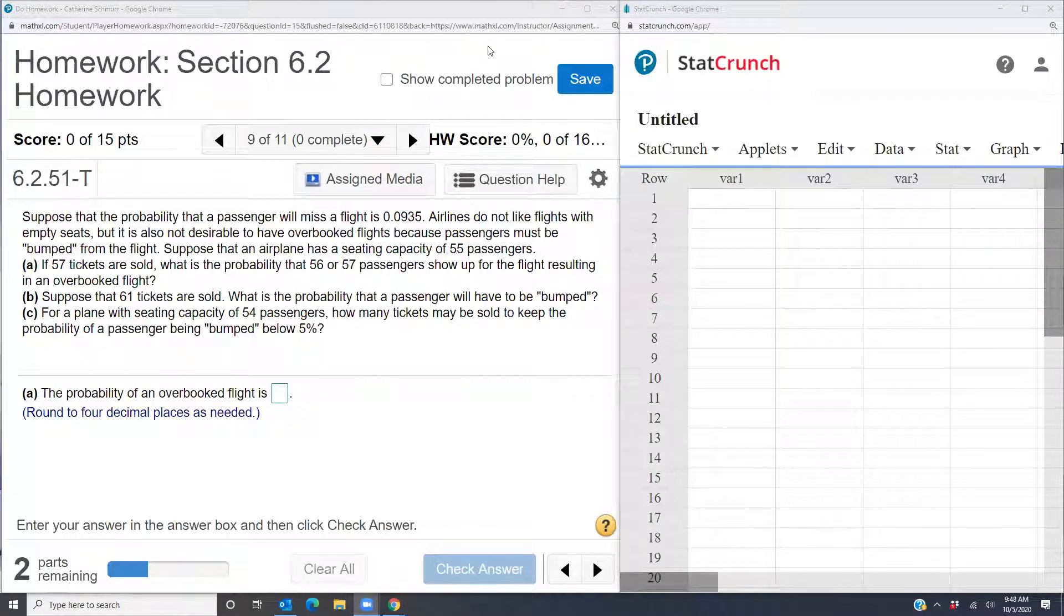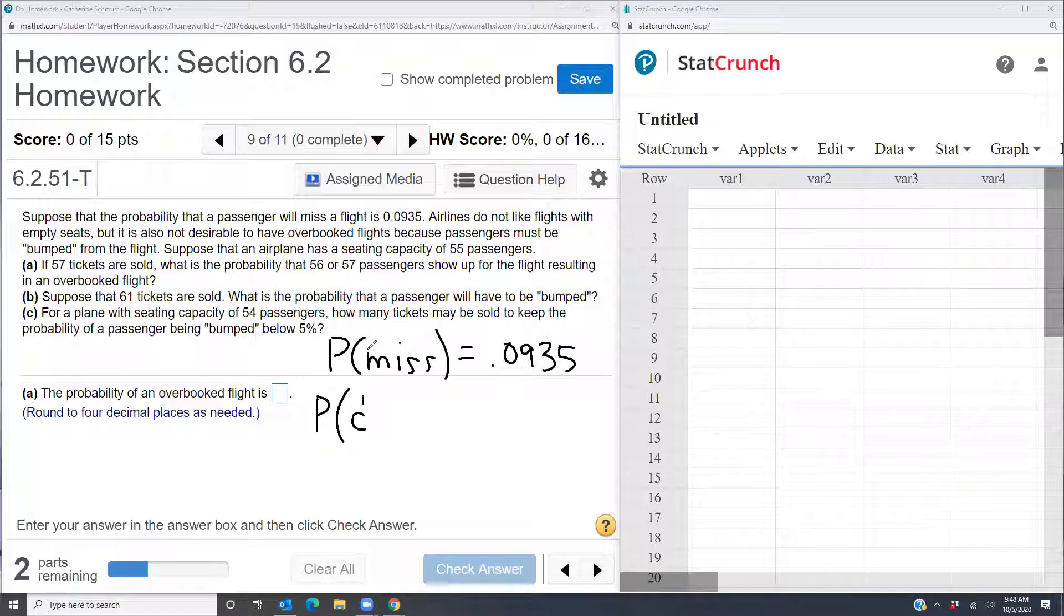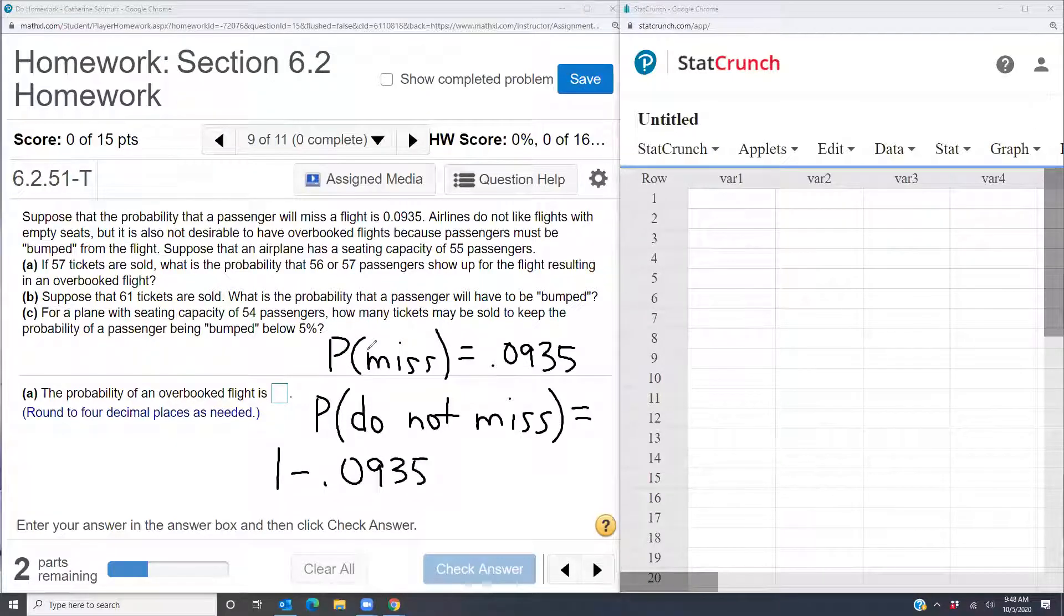Okay, so there are a couple things here that we need to make note of. First of all, the probability that someone misses a flight is .0935. So the probability that they do not miss the flight or that they arrive for the flight is going to be the complement of that. So the probability that they do not miss is going to be 1 minus .0935 which is equal to .9065. So that is the probability that they do not miss.